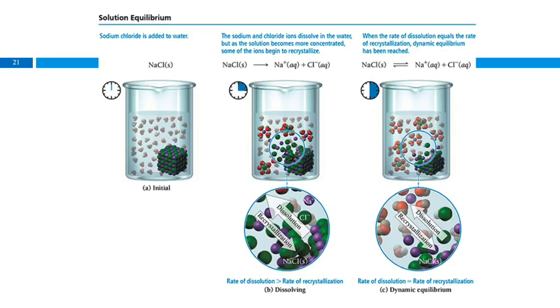So, illustrated pictures. Initially, we have our chunk of sodium chloride. There's no sodium or chloride ions present in the solution, so they can't recrystallize. No recrystallization can happen. All that can happen is this can begin to dissolve. As this dissolves and we get sodium and chloride ions in the solution, they can run into each other and recrystallize.